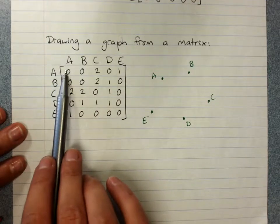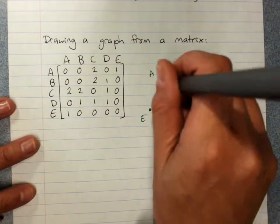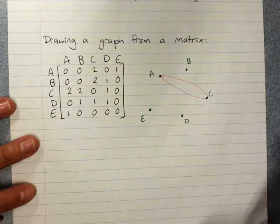Nothing connecting A, B. A to C, there's two. So you can just put in two connections between A to C.